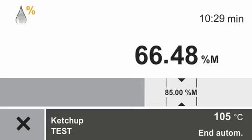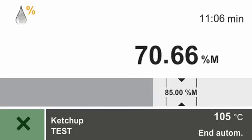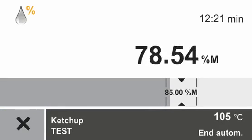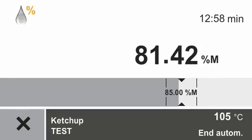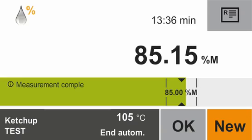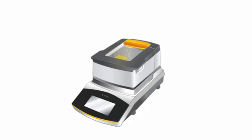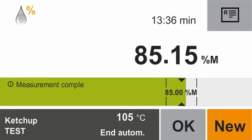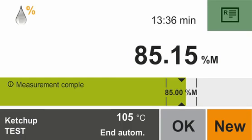You have the option at any time to terminate the measurement prematurely by pressing the stop button. When the moisture analysis is completed, you hear a signal. The light flashes three times and turns off afterwards. The results of the moisture analysis are displayed. This sample has a moisture content of 85.15%. You have the option to get a printout of the protocol of the actual measurement via the report function.